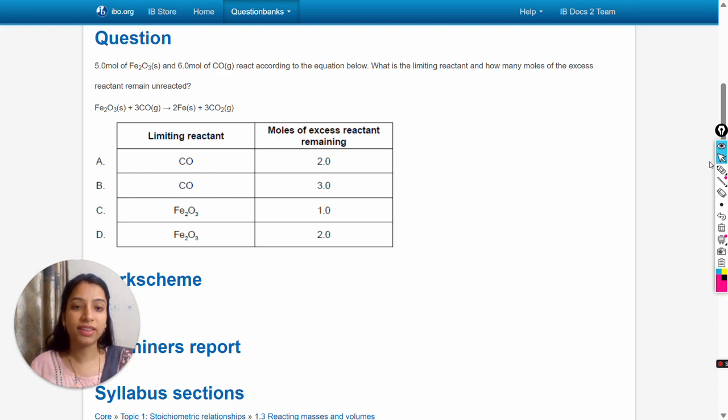Hello dear students, in this video we will solve this question: 5 mol of Fe2O3 and 6 mol of CO react according to the equation below. What is the limiting reactant and how many moles of the excess reactant remain unreacted?